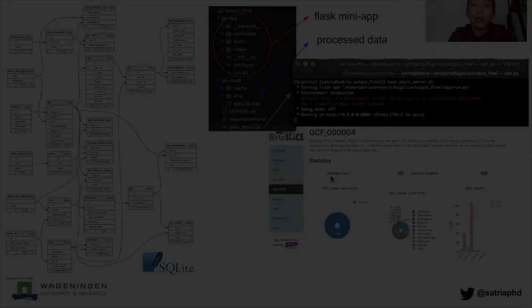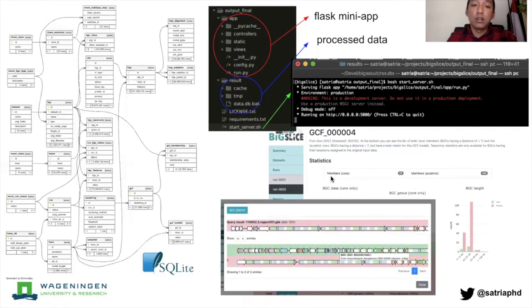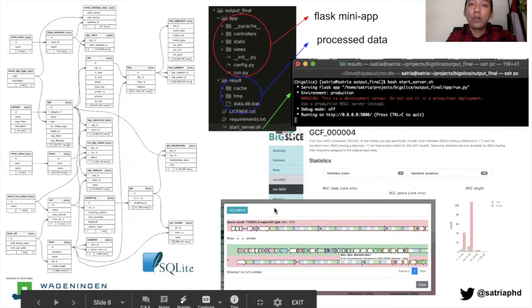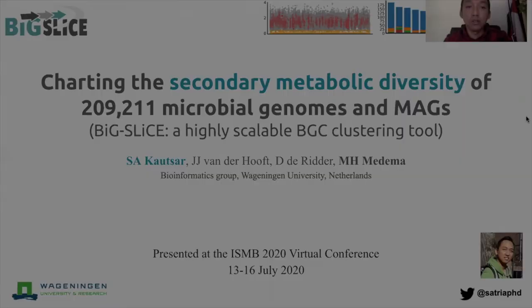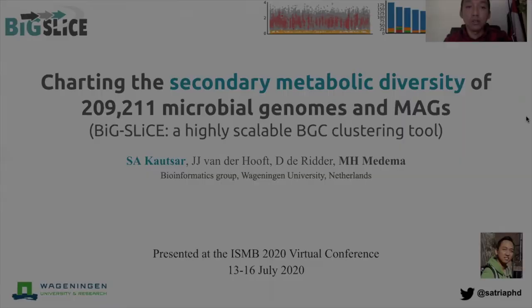One feature that you can already use and will be pretty useful is the query of putative BGCs. If we take the results of the 1.2 million BGCs clustering analysis here in this project, you can then use it to quickly do a search or dereplication of your newly sequenced BGCs. That's all from me. I will be happy to take your questions. Thank you.